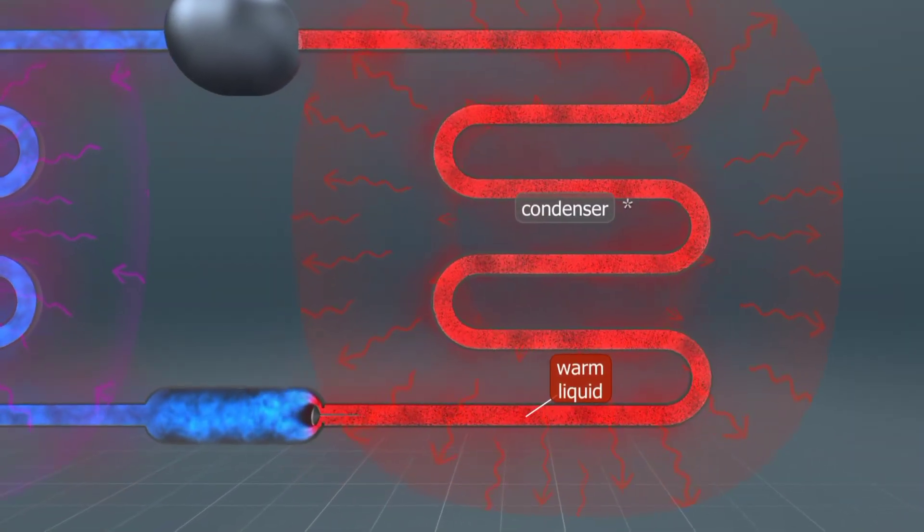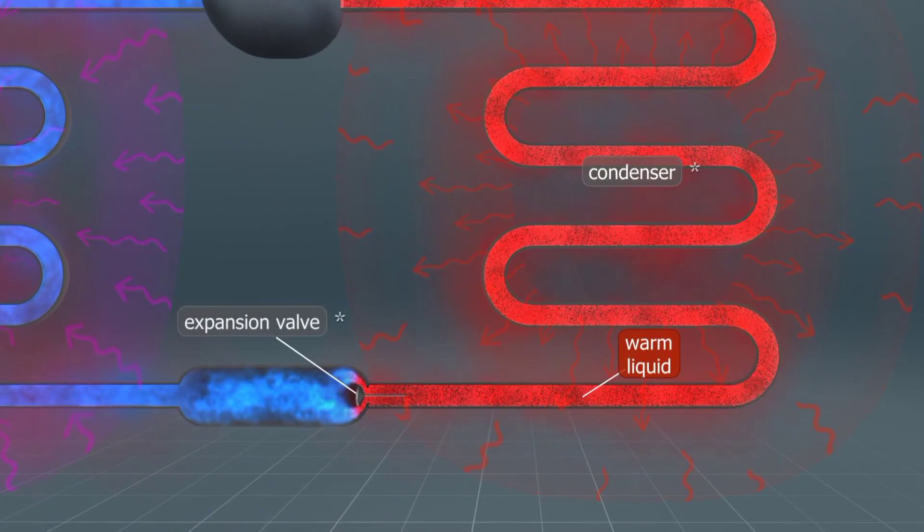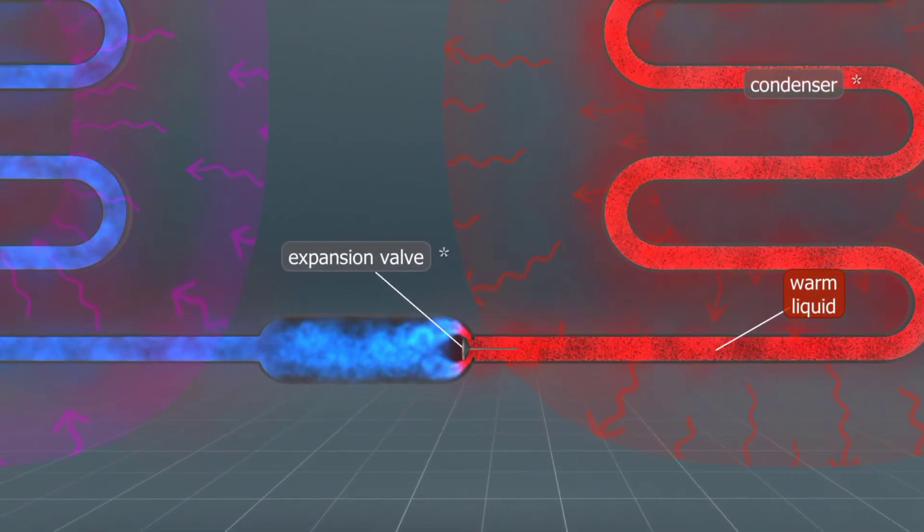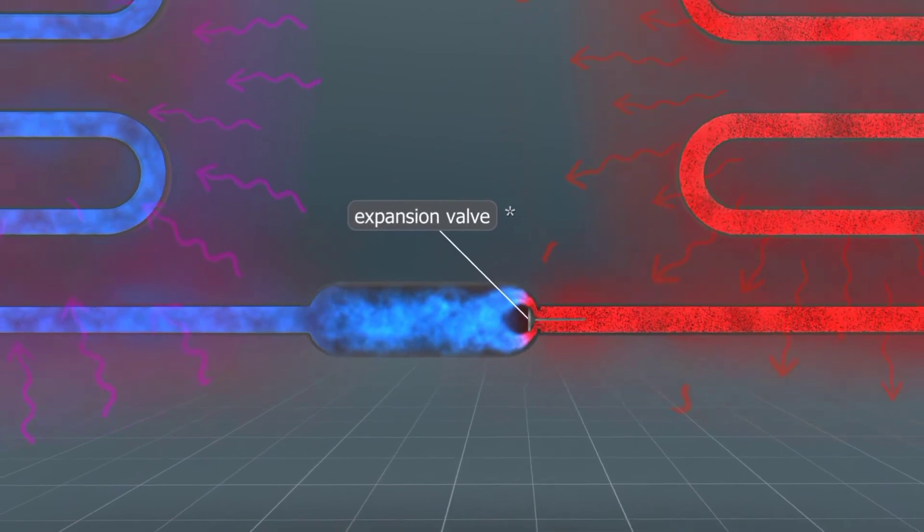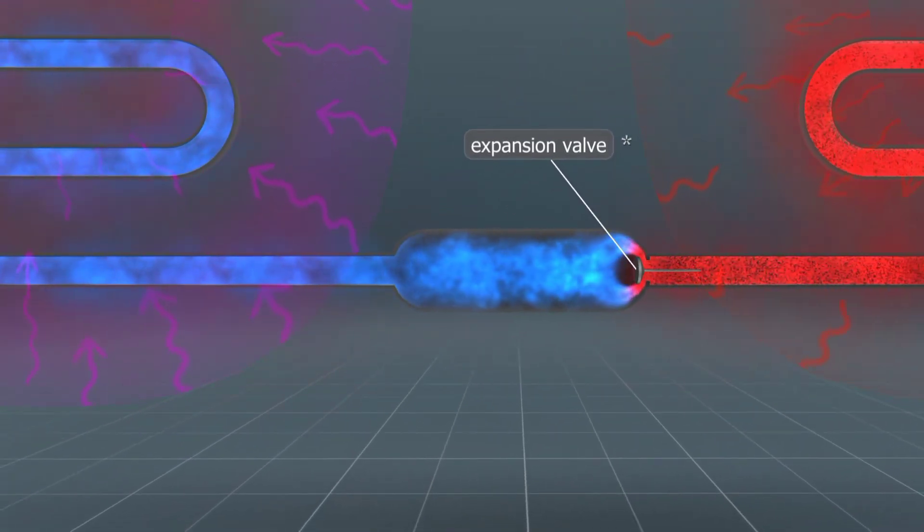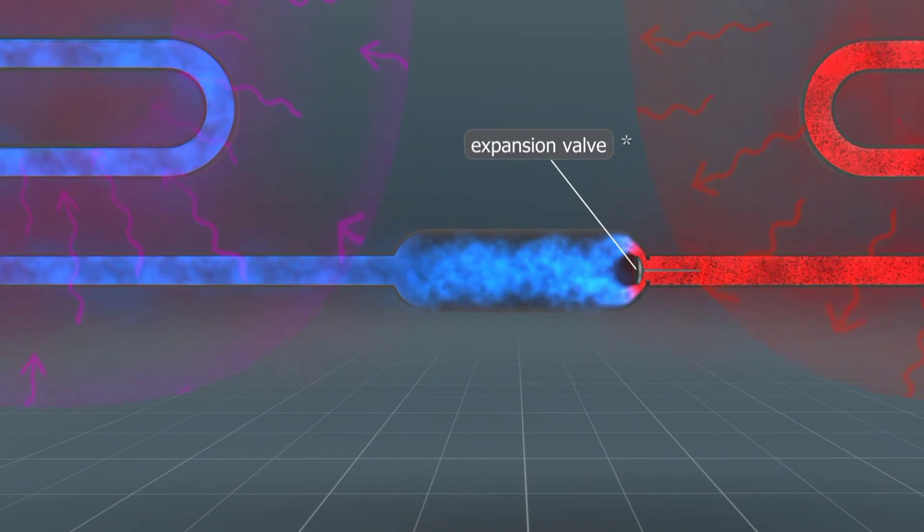This partly cooled warm liquid then enters the expansion valve. Here it collects, and therefore the pressure in the incoming pipe is high, while the pressure in the outgoing pipe is low. As the liquid flows through the expansion valve, its pressure drops suddenly, and therefore it partly evaporates and cools down.